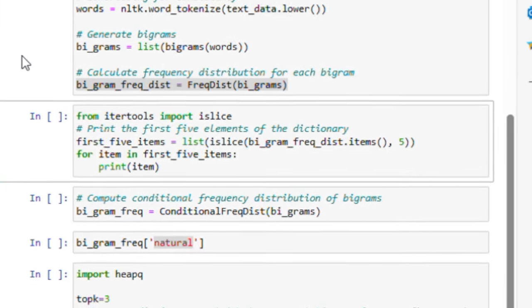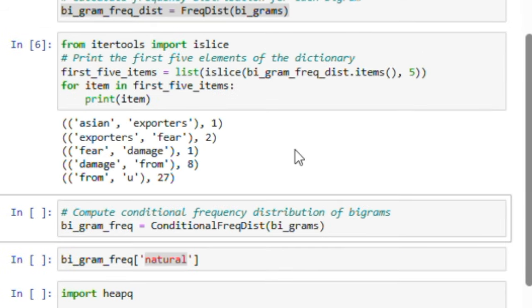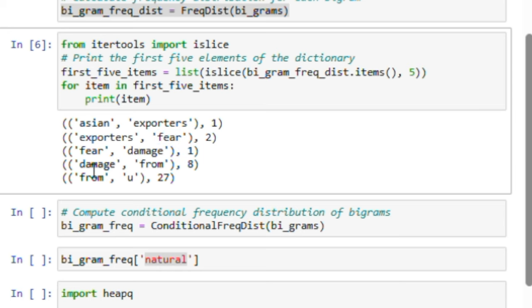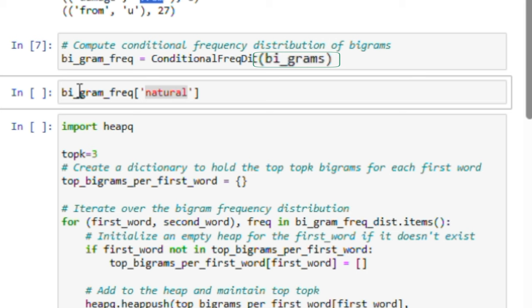To check the format of the bigram contents, let's print the first five entries of our bigram frequency distribution. Next, we create a conditional frequency distribution of bigrams. This distribution helps us understand the likelihood of a word following another.